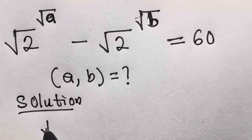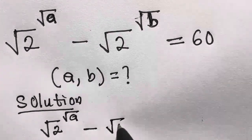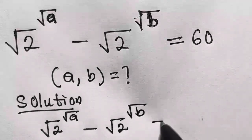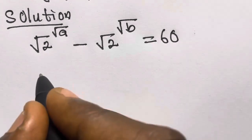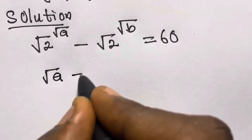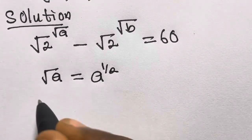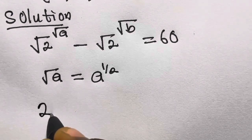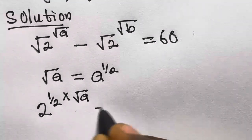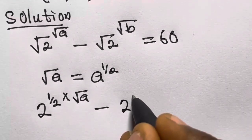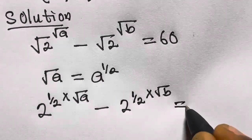We have square root of 2 raised to the power square root of a, minus square root of 2 raised to the power square root of b, equals 60. We know that square root of a means a raised to the power 1 over 2. So this expression will now become 2 raised to the power 1 over 2 times square root of a, minus 2 raised to the power 1 over 2 times square root of b, equals 60.